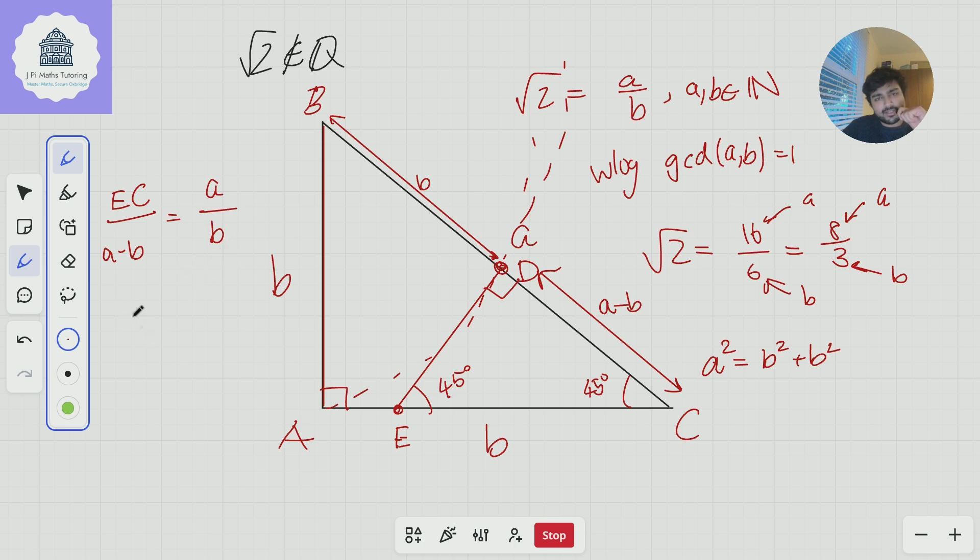And so if I just cross-multiply here, or in fact, I don't even need to cross-multiply. I can just keep EC by itself. So I get A squared minus AB all over B. But now the idea is, remember A squared is just 2B squared. So this is going to be 2B squared minus AB, all divided by B. And then simplifying this, that's just 2B minus A. So this length from E to C is just 2B minus A.